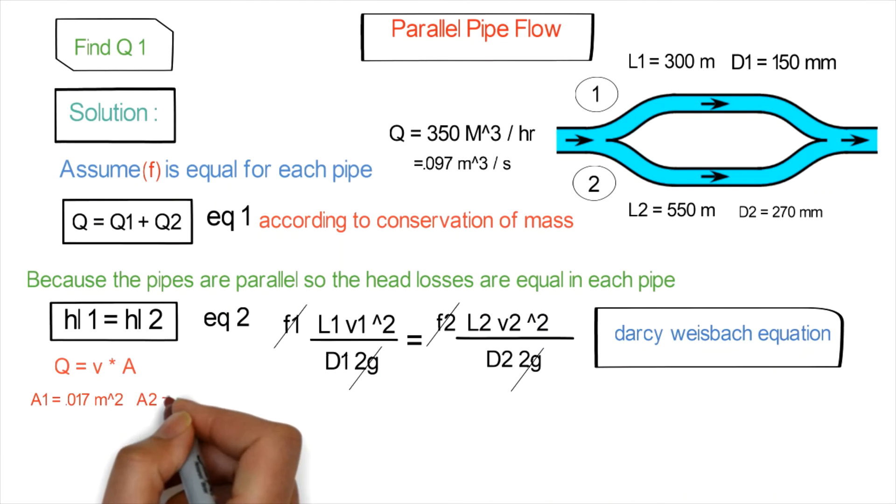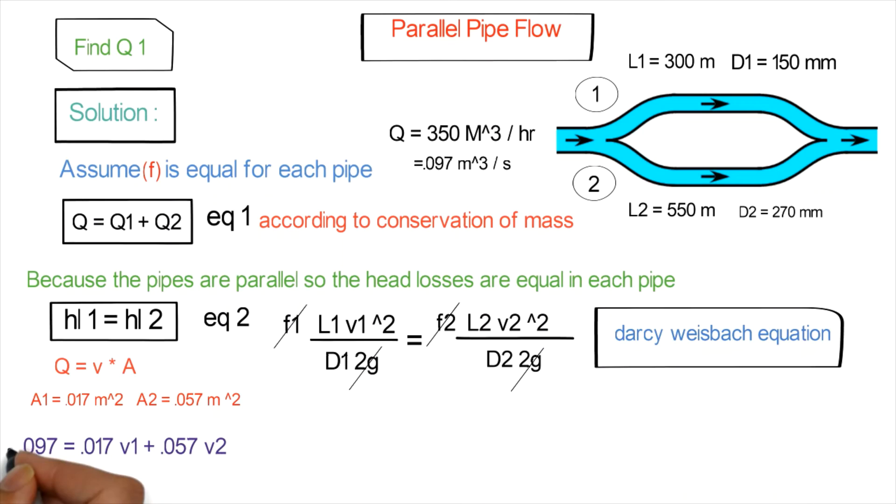The cross-sectional area of pipe one, A1, equals 0.017 square meters. A2 equals 0.057 square meters. Substituting into equation one: 0.097 equals 0.017 times V1 plus 0.057 times V2.